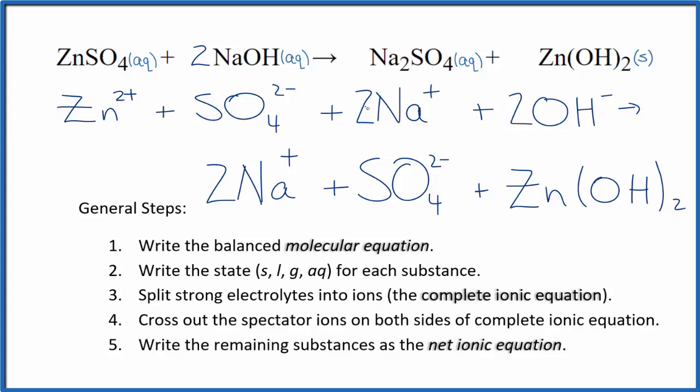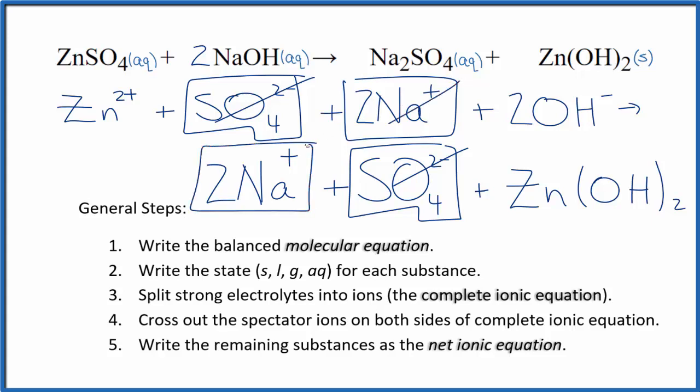I can see in the reactants here, I have a sulfate ion right here. And in the products, I also have a sulfate ion. That's a spectator ion and we can cross it out. Two sodium ions in the reactants and two in the products—spectator ions. Cross them out.